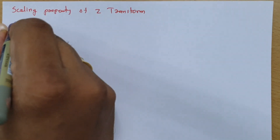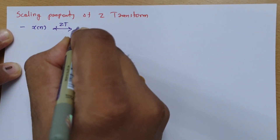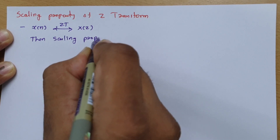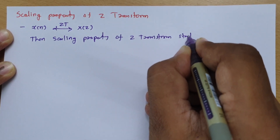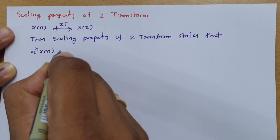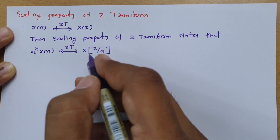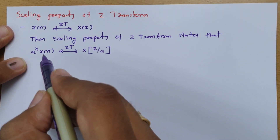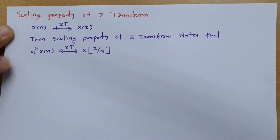So, what is the scaling property of Z transform? If we have a signal X of n and its Z transform is X of Z, then the scaling property states that A to the power n times X of n has the Z transform X of Z divided by A. This is the scaling property of Z transform.